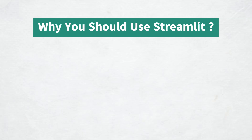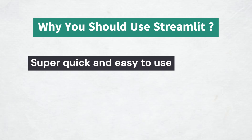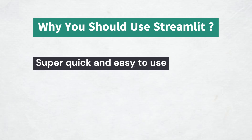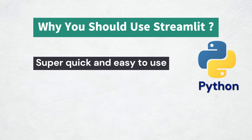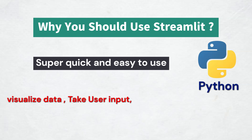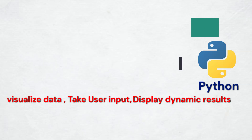So why should you use Streamlit? First, it's super quick and easy to use. With just a few lines of Python, you can build and deploy applications to visualize data, take user input, and display dynamic results. Streamlit updates in real time, meaning when you change your code, your app updates immediately — you don't need to restart anything.